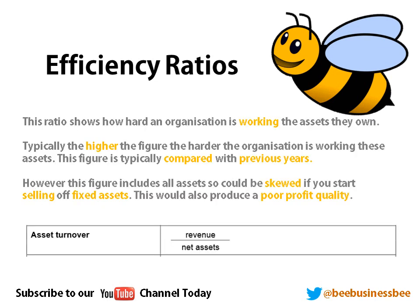Asset turnover is probably the more confusing of these ratios. It shows you how hard an organisation is working to turn the assets they own into money. Typically, the higher the figure, the harder the organisation is working to turn these assets into money. This figure is typically compared to previous years — there is no industry standard or ideal. You're looking back at the figure to assess whether the organisation is using its assets more efficiently.